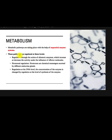Regulation of energy — whether energy is being used or stored — is regulated through allosteric enzymes. Allosteric enzymes will increase or decrease their activity under the influence of effector molecules. Effector molecules include glucose, fatty acids, ATP, ADP, and AMP. These enzymes are sensitive to all of these things.